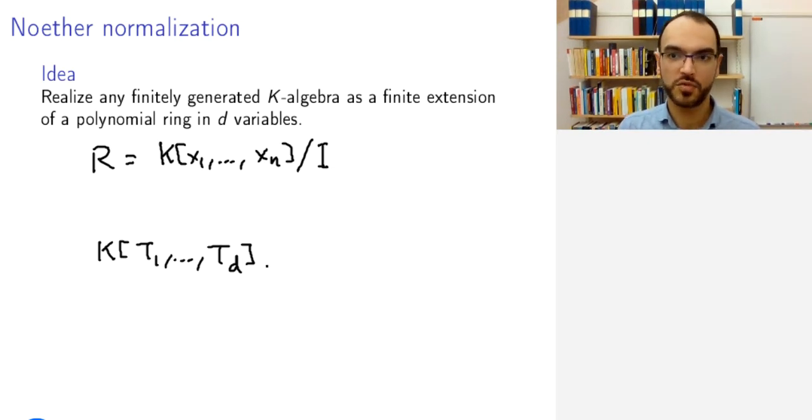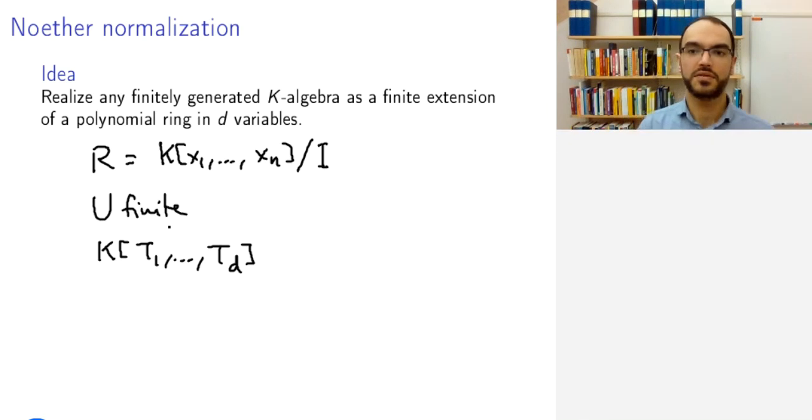But of course, it's too much to hope for that it would exactly be the algebra R. So instead, we want this to be a finite extension. In other words, our R should be d variables that carry somehow the essential size and then some small finite part.